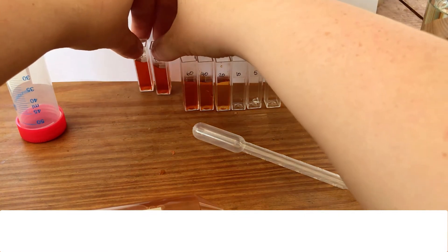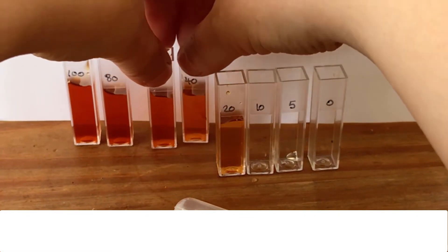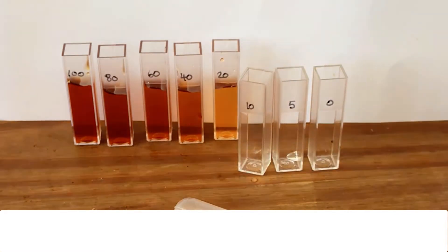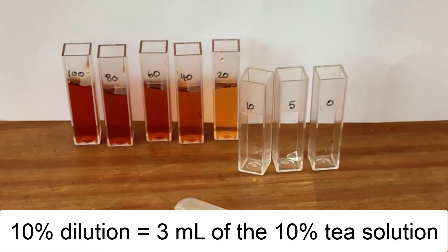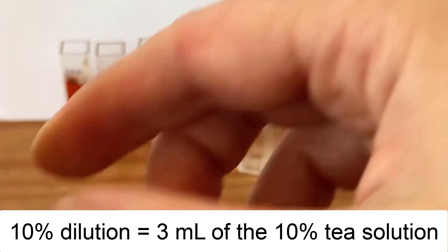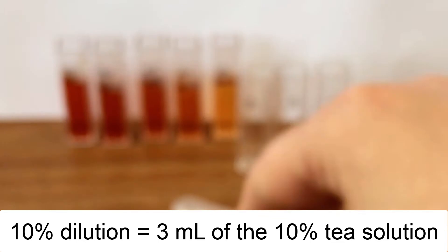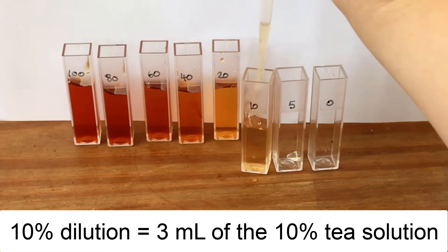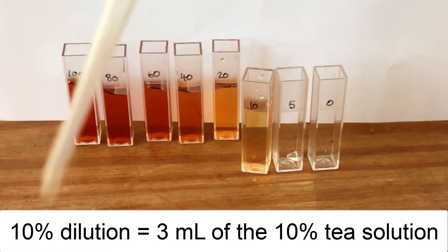So there we go, I've got my first dilutions in there. You can see that the color is getting fainter. I'll just put those against the white card so you can see that a little bit better, so you can see the concentrations or the color is getting weaker each time.